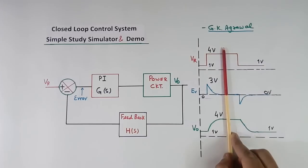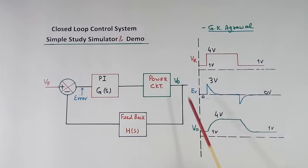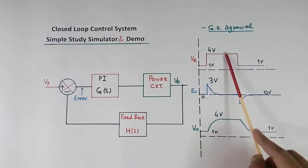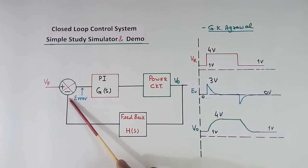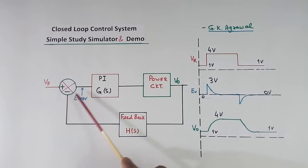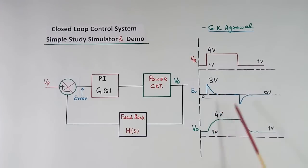After some time, say at this point, this point voltage and this point voltage will be equal — 4 volt. When both become 4 volt, this also 4 volt, then error will become 0. So here output will increase, error will reduce, at this point this will become equal to this, and error becomes 0.